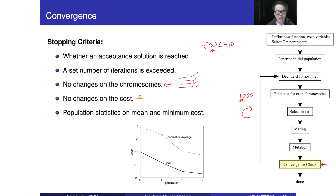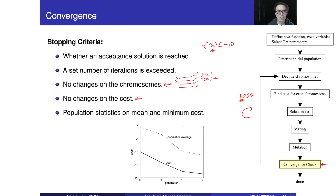Another criterion is to look at the cost of each chromosome. This is x, this is another x — the first x, the second chromosome, and so on. If the costs are close enough, then we are going to stop. So that is, when we talk about no changes, we have to define that. You can find different ways to define what it means by no change in the cost.